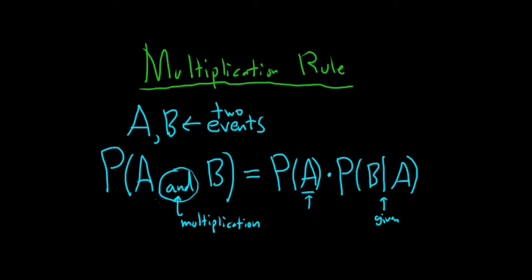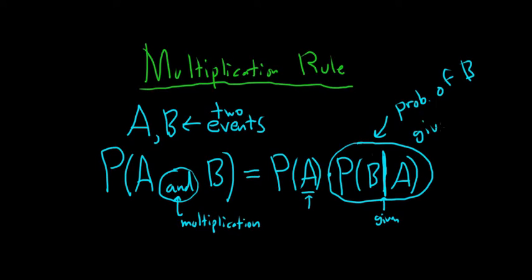The probability of A and B equals the probability of A times the probability of B given A. This is the probability that B has occurred given that A has already happened. The line means given.